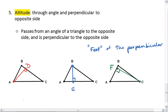And again, we see that we have three altitudes in a triangle. For all five of these special segments and lines, we have three different ones that exist inside each triangle.